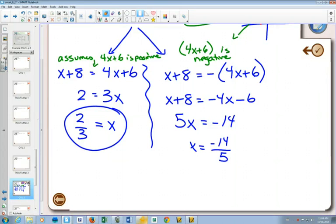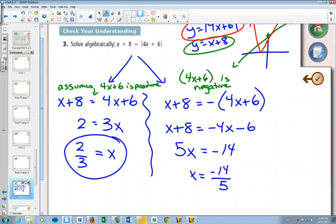Especially in this case, because it could be that when you plug this in, you're going to end up with an error. We saw in the previous examples that the errors happened when the absolute value of something equaled a negative number. So a short way to verify is if I plug in positive 2 thirds on this side, 2 thirds plus 8, can you see that that's going to be a positive number?